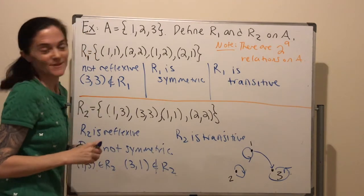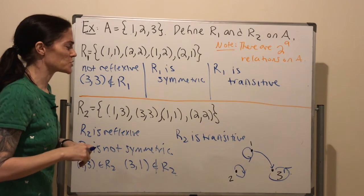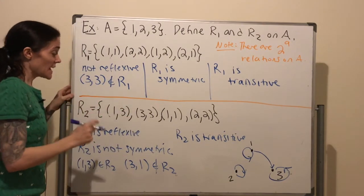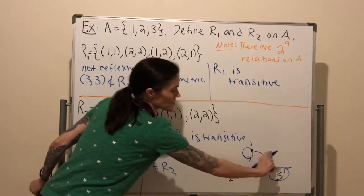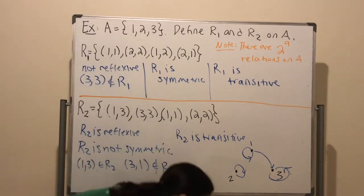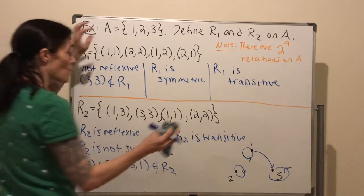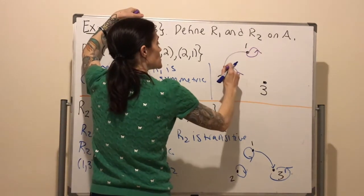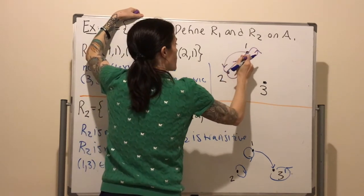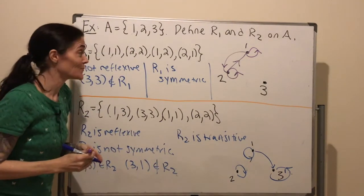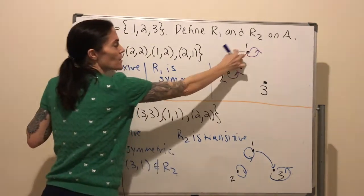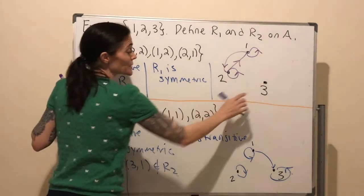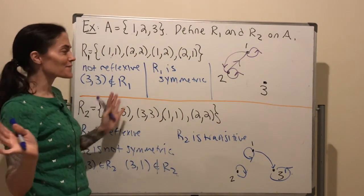You can translate the properties of reflexive, symmetric, and transitive in terms of a diagram. For reflexivity, you have a loop on each element of A. Let's also draw the diagram for R1: 1 relates to 1, 2 relates to 2, 1 relates to 2, and 2 relates to 1. You can see the symmetric aspect here — R2 was not symmetric because we do not have an arrow in the other direction. Also, R1 is not reflexive because 3 does not have a loop.